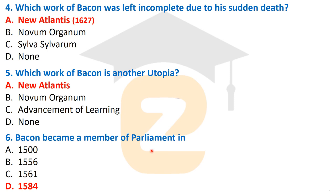Bacon became a member of Parliament in 1584 — that is the correct answer, Option D. He served the English government as Attorney General and also as Lord Chancellor of England, and he became a member of Parliament in 1584.